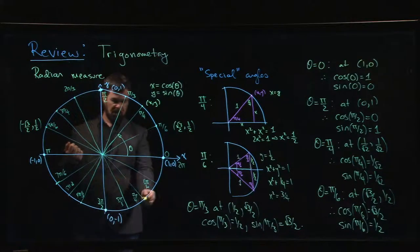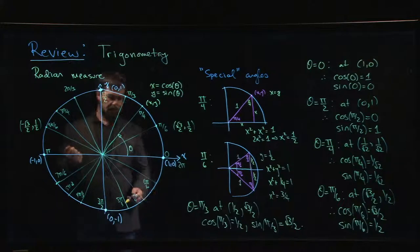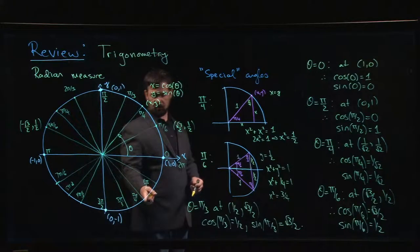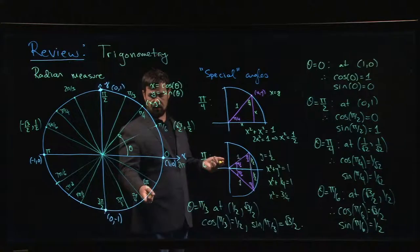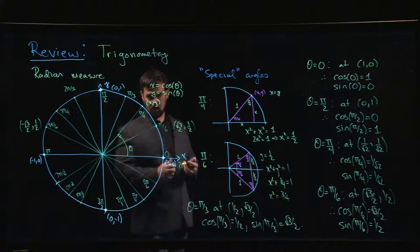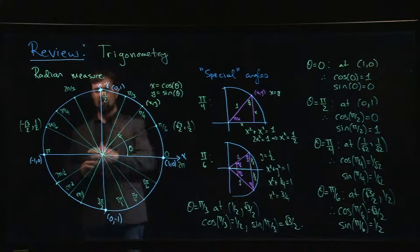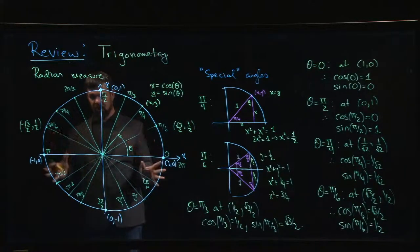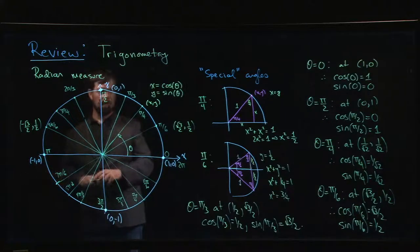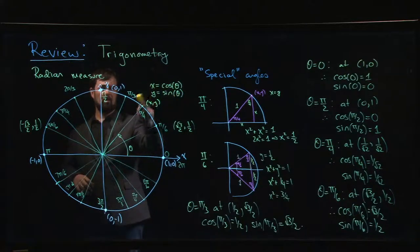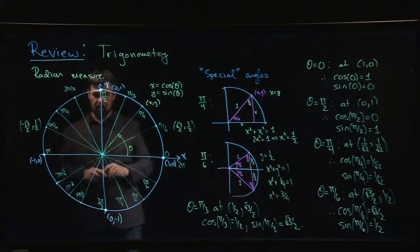Same thing if I'm down at, say, 7 pi over 4. X is still positive, so cosine of 7 pi over 4 is going to be 1 over root 2. Sine of 7 pi over 4 is going to be minus 1 over root 2. Once you've got the first quadrant, you know everything else. You just have to pay attention to signs for the quadrant you're in. Remember that cos is always the x coordinate, sine is always the y coordinate, and you'll be okay.